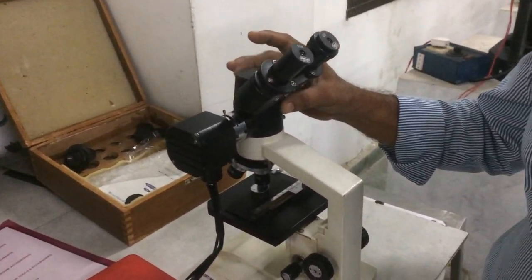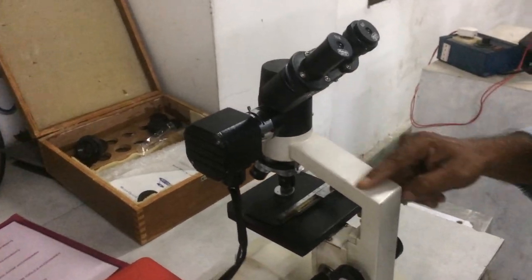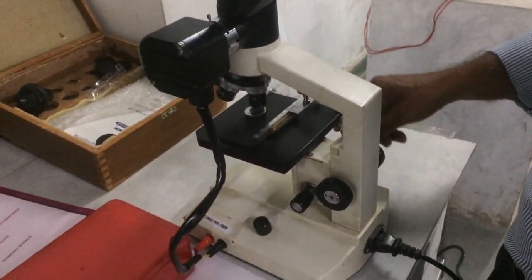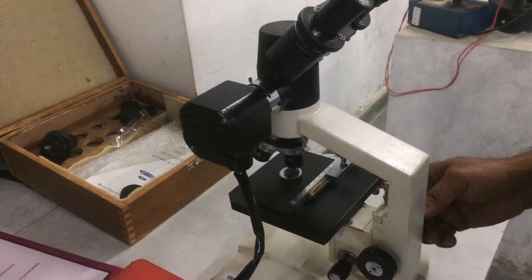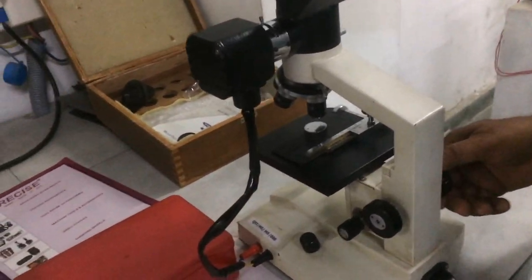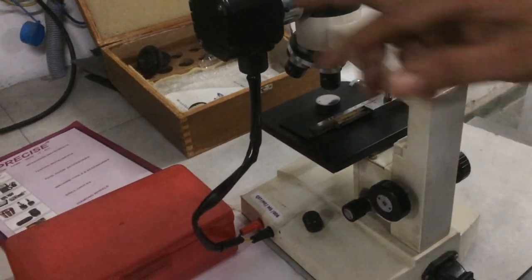This is eyepiece and frame. Then observation tube. This is to lift and lower the object. This is lighting system.